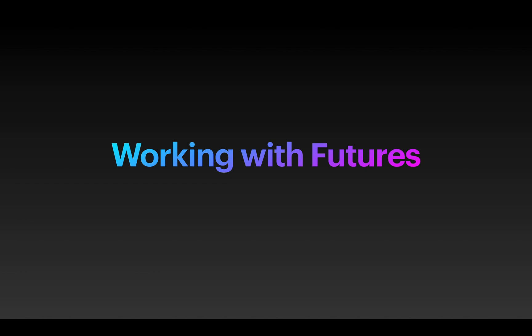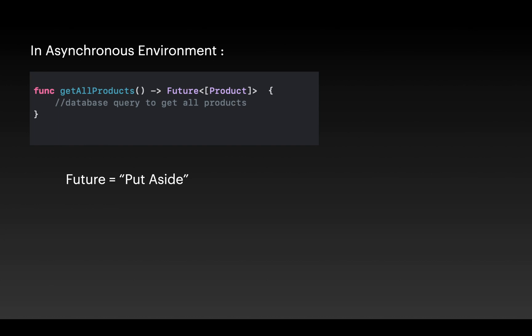Working with futures can be confusing at first, but since Vapor uses them extensively they'll quickly become second nature. In most cases, when you receive a future from a function you want to do something with the actual result inside the future. Since the result hasn't actually returned yet, you provide a callback to execute when the future completes. When the program reaches the get-all-products function, it makes a database request on the event loop, which processes its work — in simplistic terms it can be thought of as a thread. The get-all-products function doesn't return the actual data immediately; it returns a future instead. This means the event loop pauses execution of that code and works on any other code that is queued up.